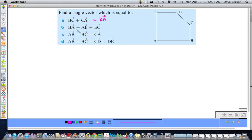Let's check this out. BA plus AE plus EC. AA, those are the same. And then EE, those are the same.